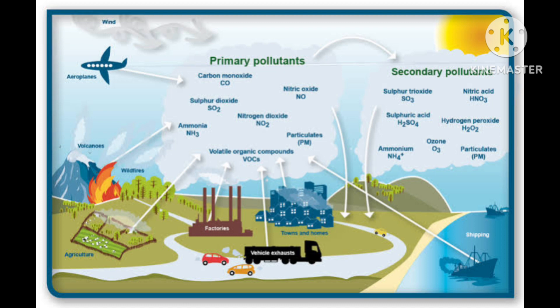Now, mist. Mist is produced by particles of spray liquids and by condensation of vapors in air. Examples are sulfuric acid mist, and herbicides and insecticides that miss their targets and travel through the air to form mist.